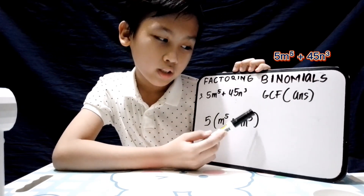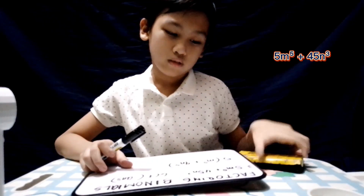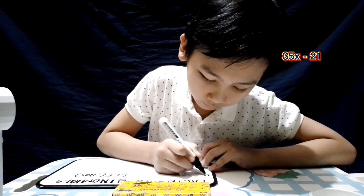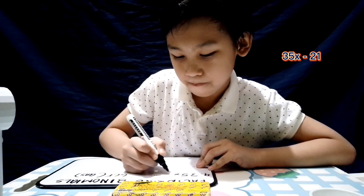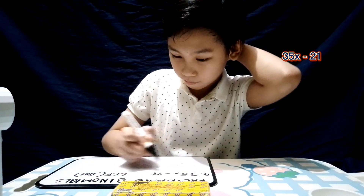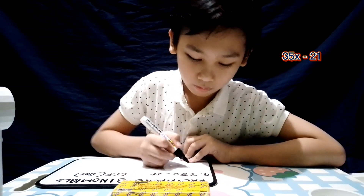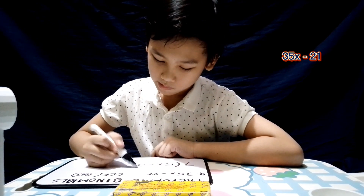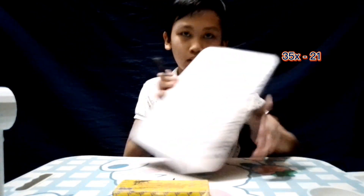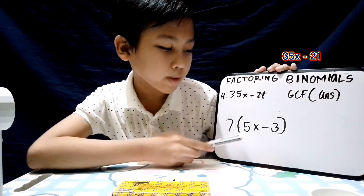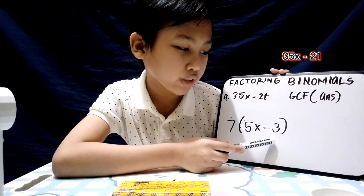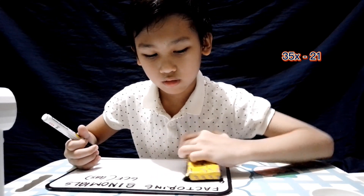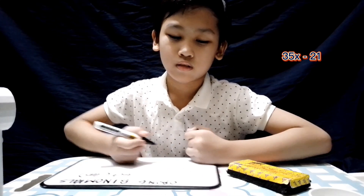Next: 35x minus 21. The answer is 7 times open parenthesis 5x minus 3, close parenthesis. Parenthesis here is multiplication, so you just have to check your answer using the distributive property.